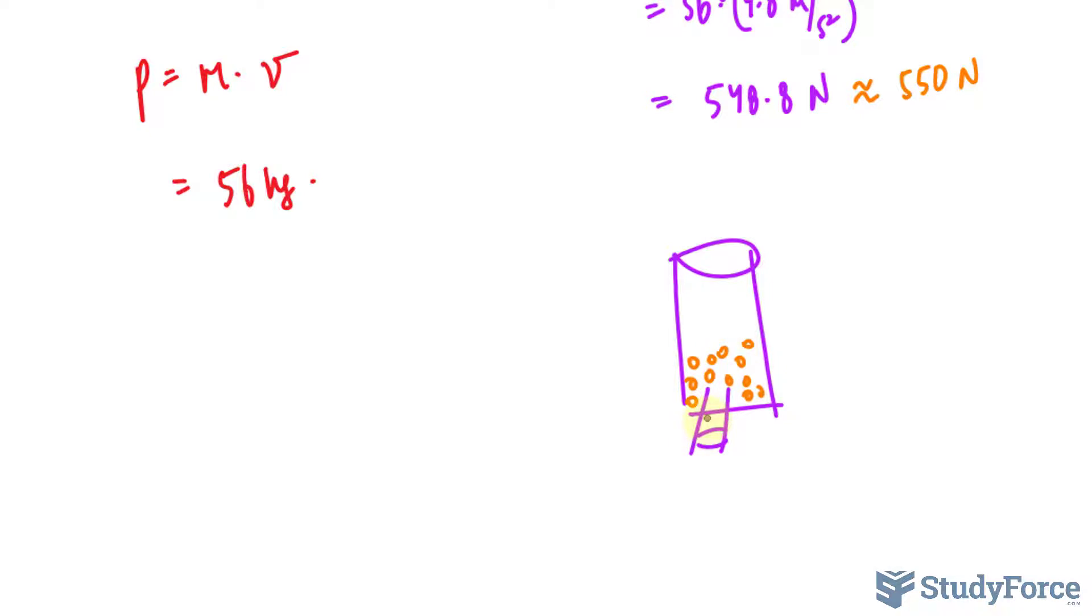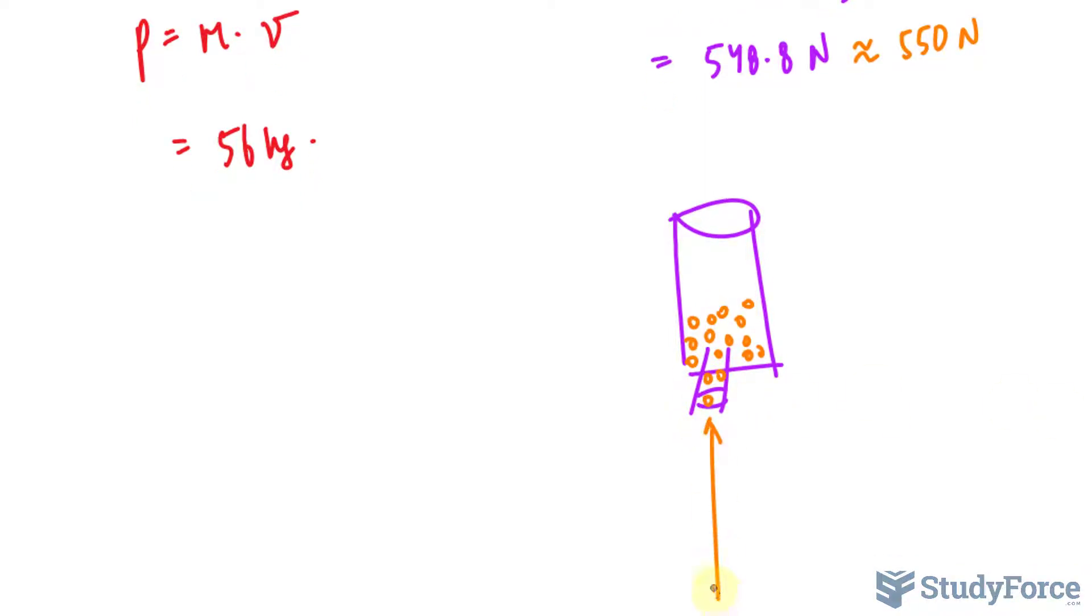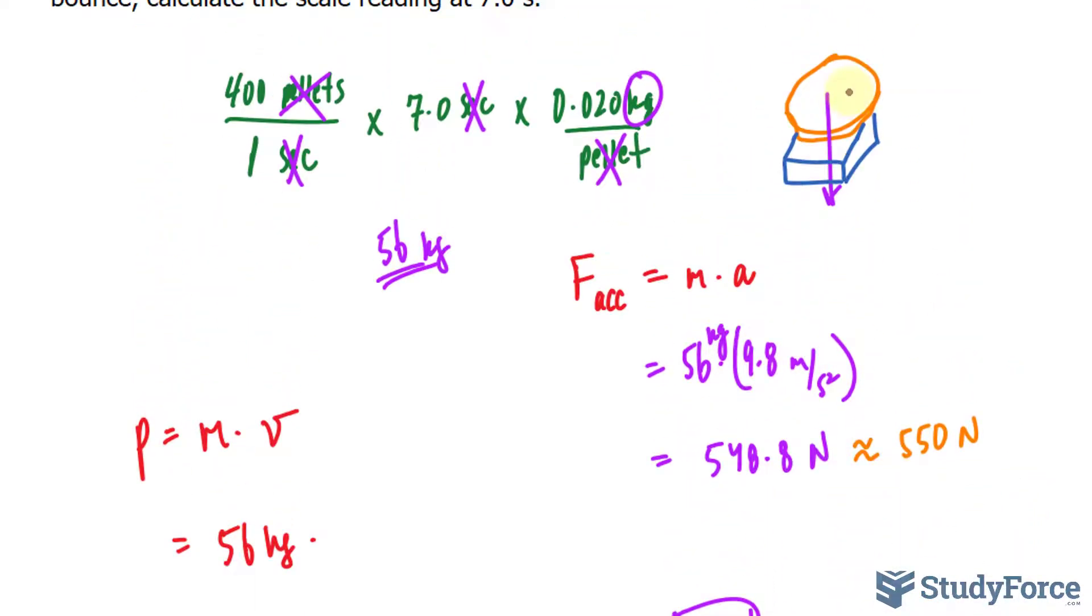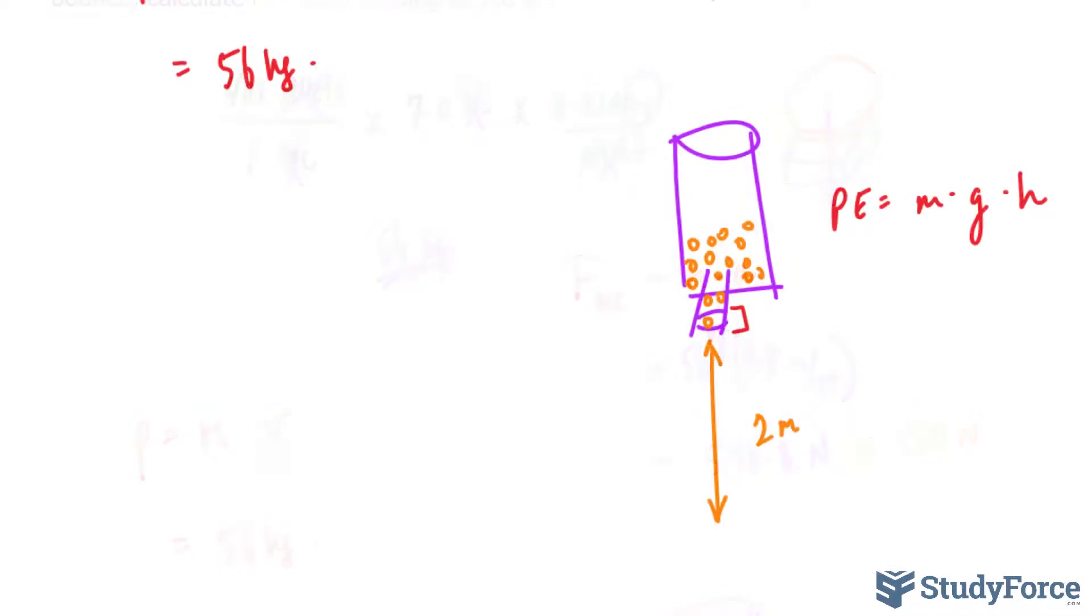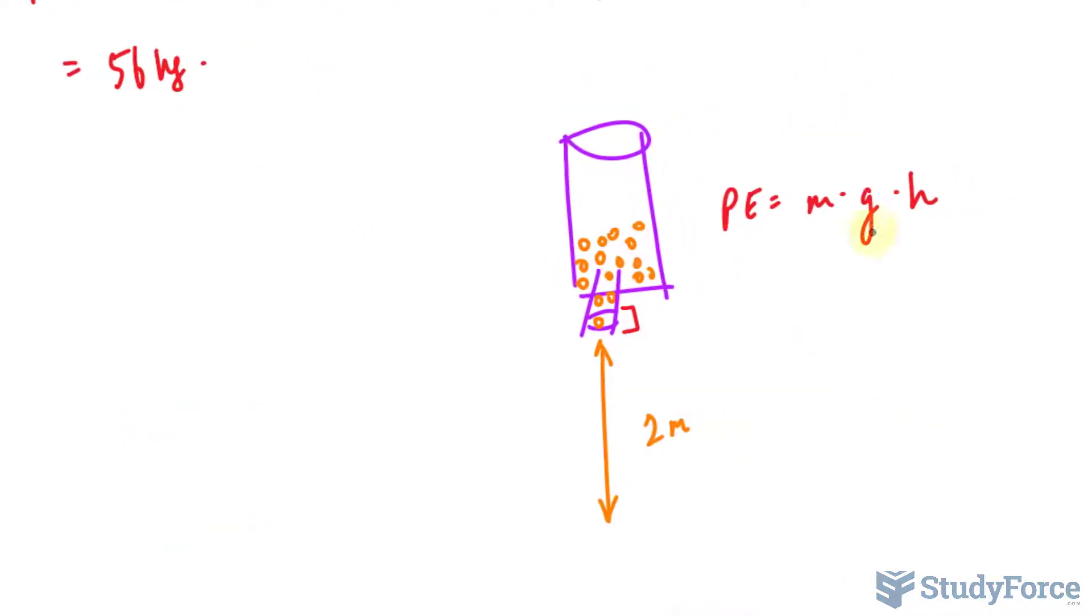Now, before the pellets fall, let's say that they are found in this container and there is a spout where they are released. These are the pellets, these orange things that I'm drawing. The distance that it falls is 2 meters. So there is potential energy at this point.